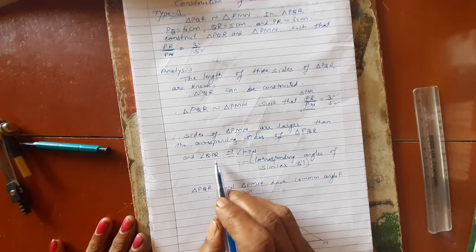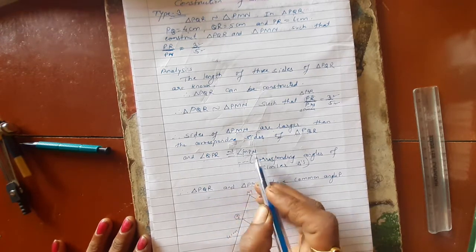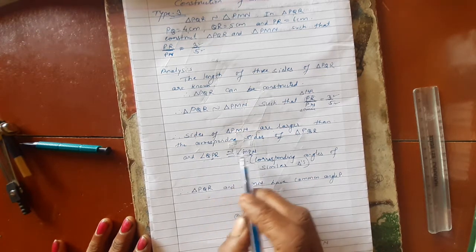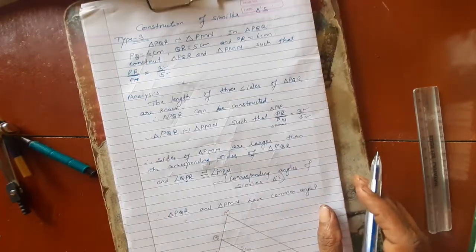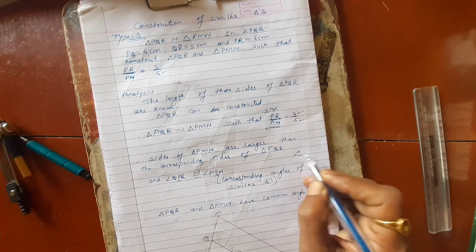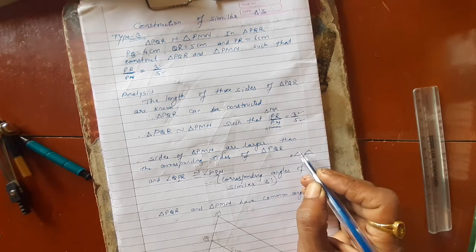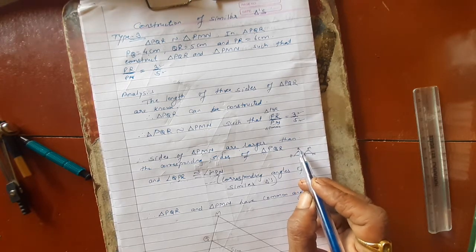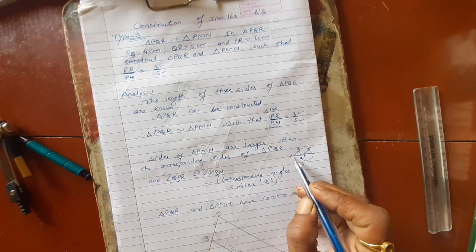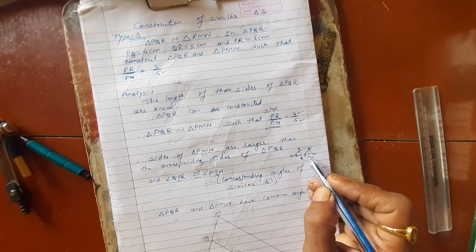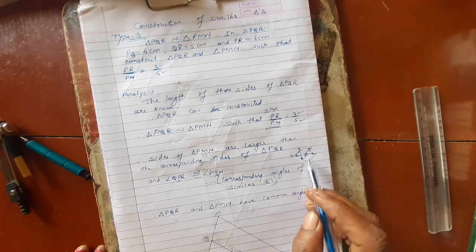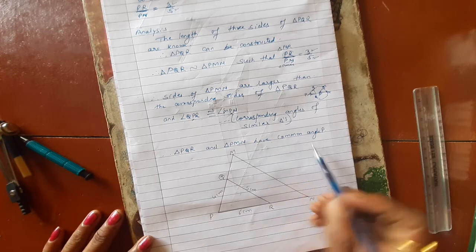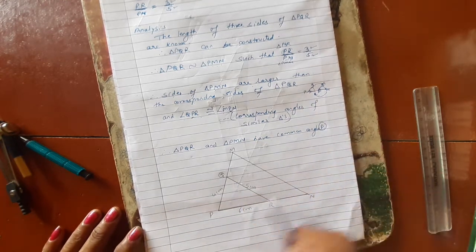Also, angle QPR is congruent to angle MPN. P and P are the same vertex. Q corresponds to M, R corresponds to N — P and P vertices will be the same. Same as what I showed you in type 2. So Q corresponds to M, R corresponds to N, P and P. These are corresponding angles of the similar triangles and they are congruent. Triangle PQR and triangle PMN have common angle P.